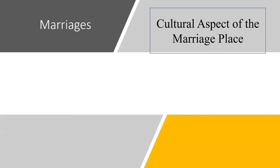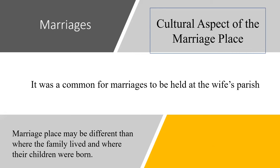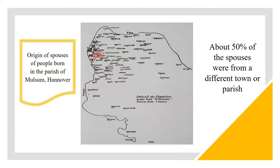Marriages. In Germany, it was common for marriages to be held in the parish where the wife was from. Because of this, where the family lived and where their children were born may not be the same place the parents were married. This map shows the city of Molsem in the Prussian province of Hanover, with surrounding towns listed as places from where about half of the spouses of the people from Molsem were from. Finding the location of the marriage typically reveals the place where the wife's family was from, and this is one of the major aspects in the basic research process to be covered in webinar number eight.